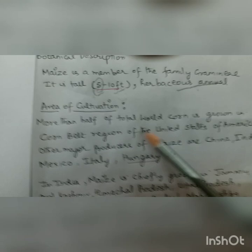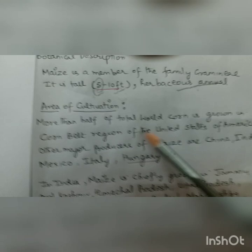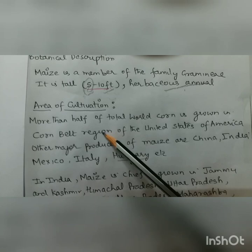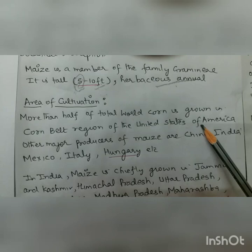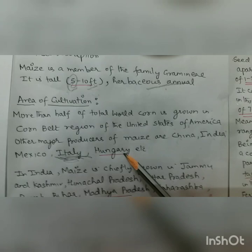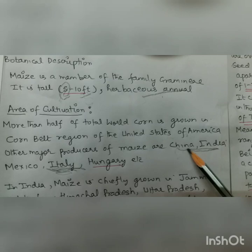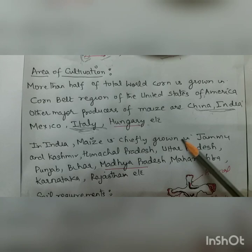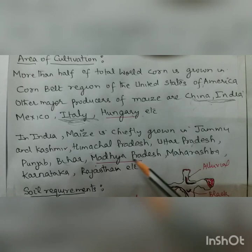The area of cultivation is studied in two parts — world and India. In the world, more than half of the total world corn is grown in the corn belt region of the United States of America. Besides that, we have China, India, Mexico, Italy — which is prominently in the news nowadays — and Hungary. In India, maize is chiefly grown in Jammu and Kashmir, Himachal Pradesh, Uttar Pradesh, Punjab, Bihar, Madhya Pradesh, Maharashtra, Karnataka, and Rajasthan.